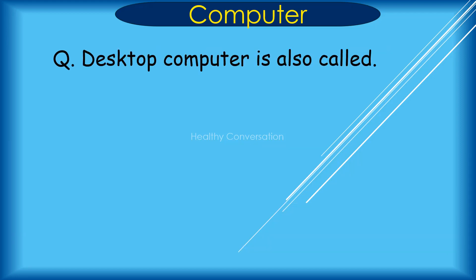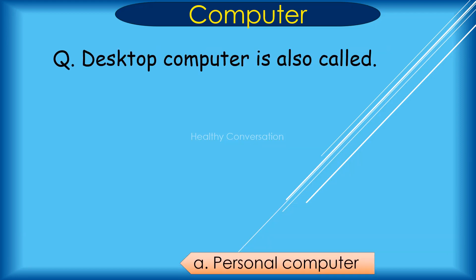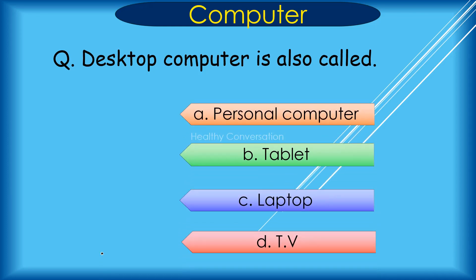Question: Desktop computer is also called A. Personal computer, B. Tablet, C. Laptop, D. TV. Correct answer is A. Personal computer.